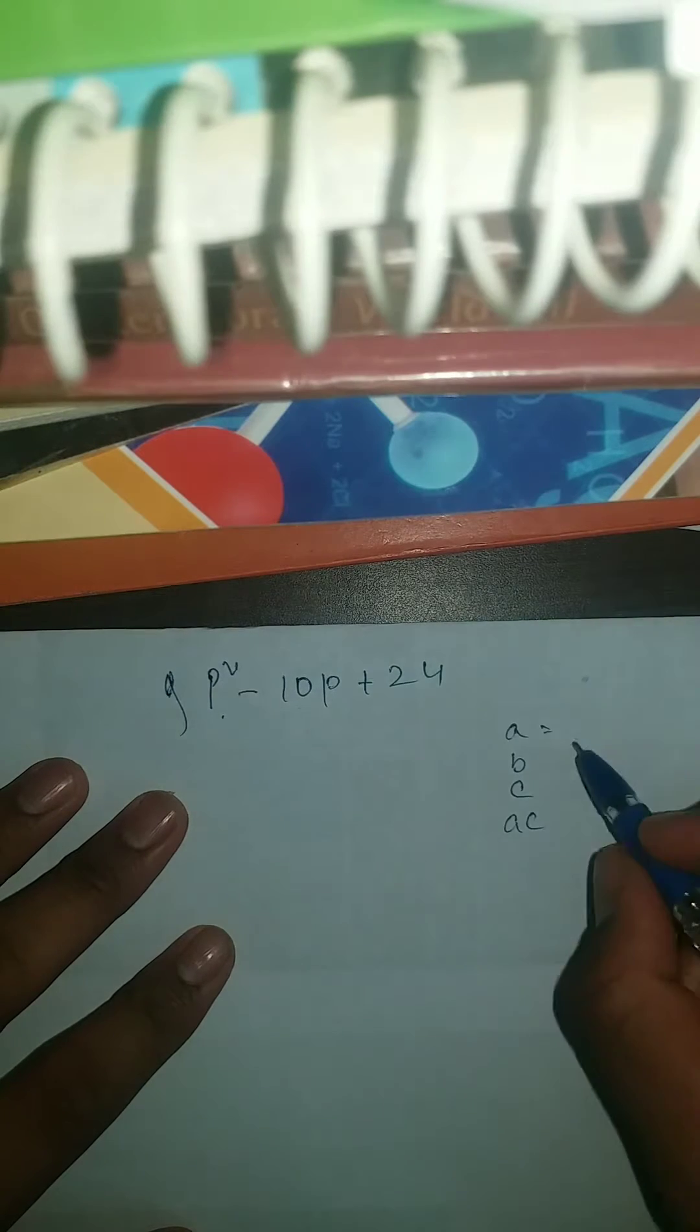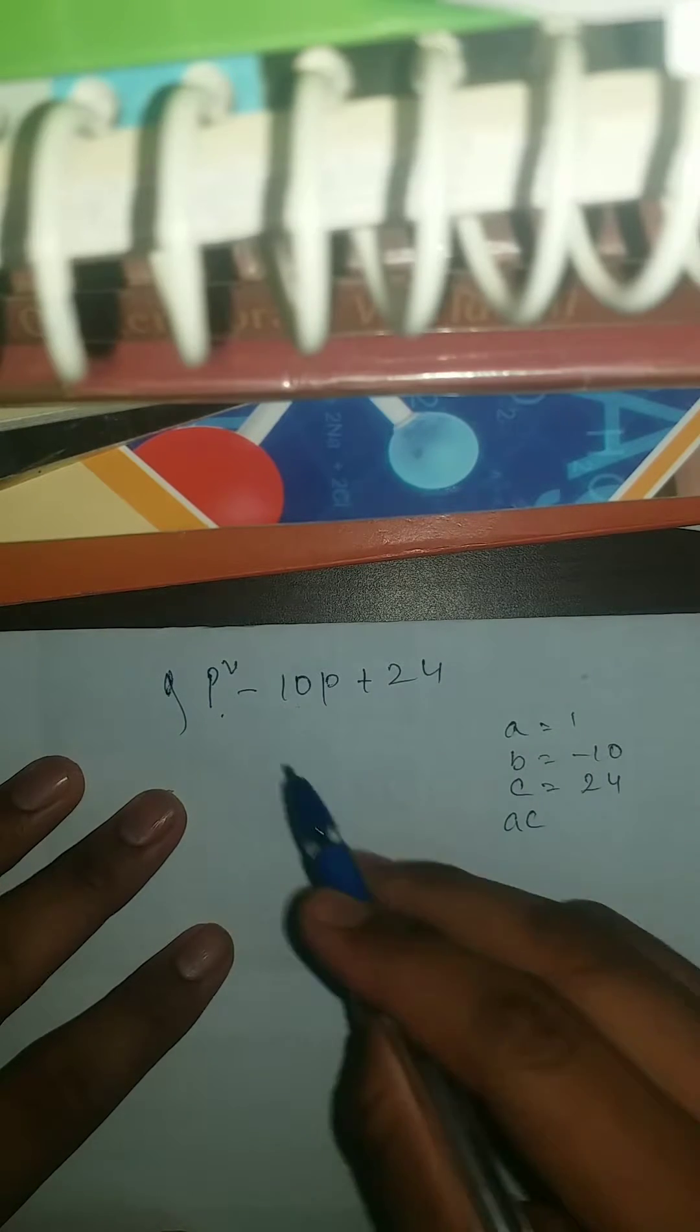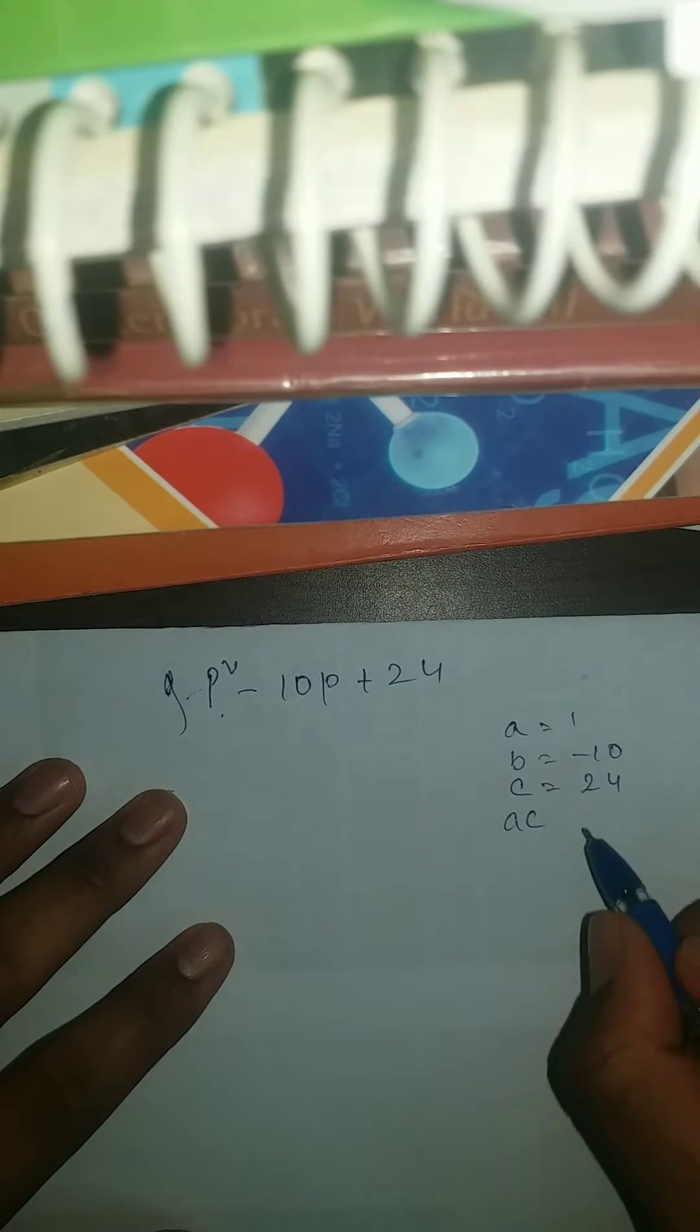So A is your 1, B is your minus 10, C is your 24 and A, C is your 1 into 24, which is your 24. Okay, done.